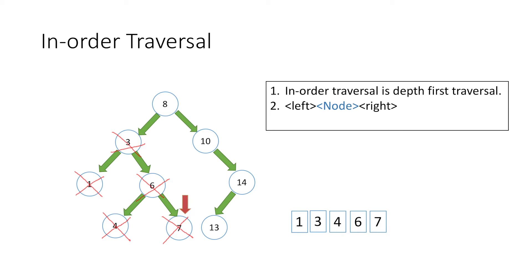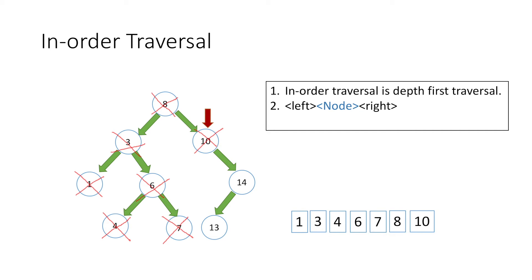Since nodes 6 and 3 have both been traversed in both directions, we move directly up to node 8. For node 8 we have already traversed all nodes to its left, so we print its value which is 8 and mark it as traversed. Then according to the rule we move right to node 10. Node 10 has no left child so we print its value which is 10 and mark it as traversed.